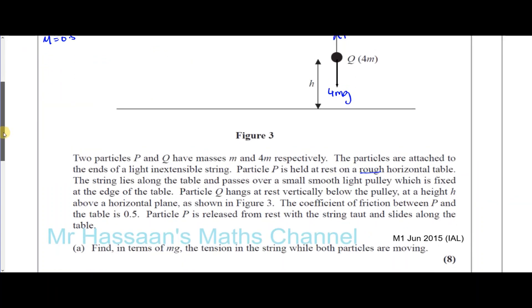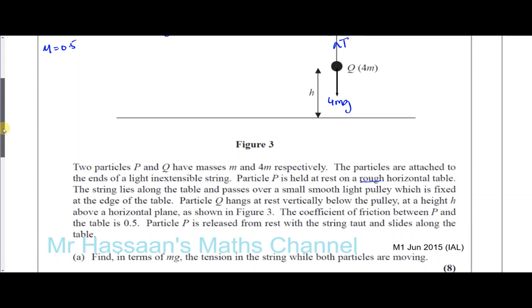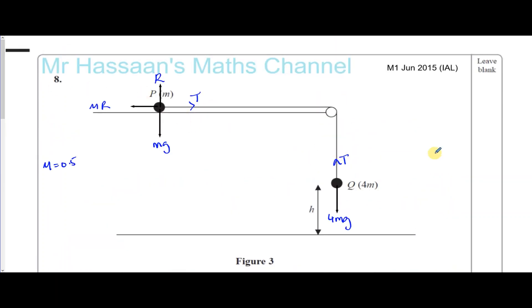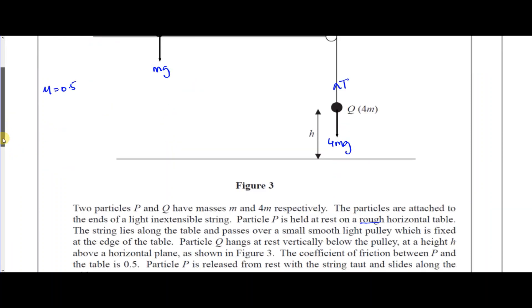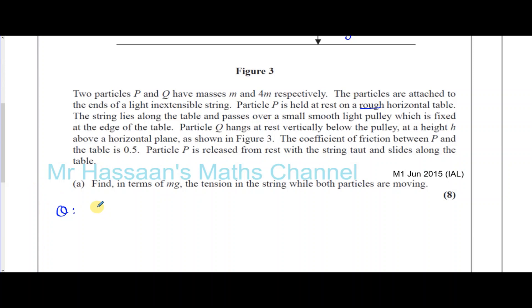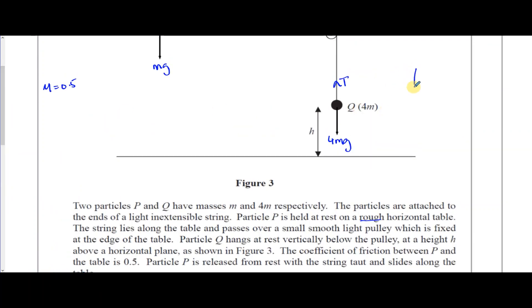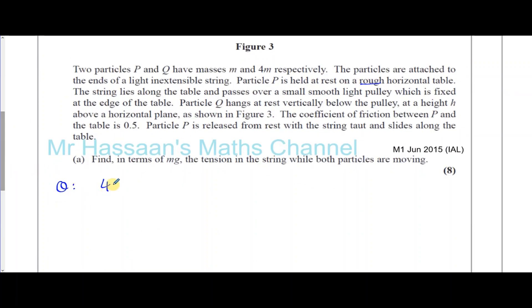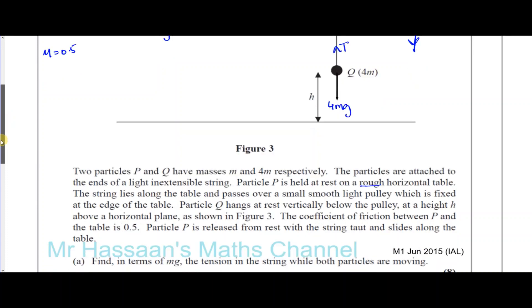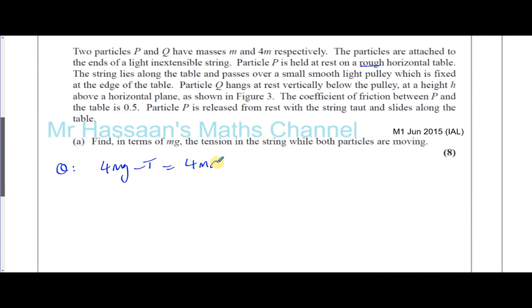We've got to find the tension in the string, so let's form a pair of equations. Starting with Q, which is the easy one: I know Q is going to be moving down when released, so I take down as positive. Using F = ma, the resultant force is 4Mg minus T, which equals 4MA. That's equation one, taking down as positive.